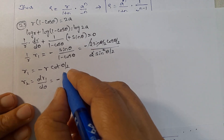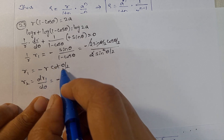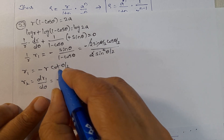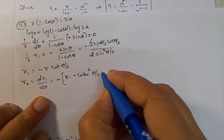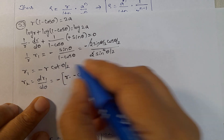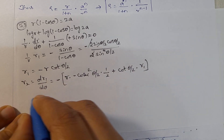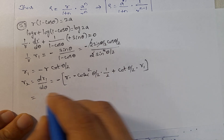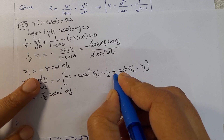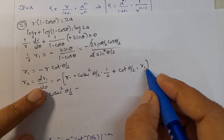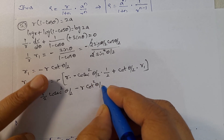So r1 = -r cot(θ/2). Differentiating r1 with respect to θ to find r2: using the product rule, first function r times differentiation of cot(θ/2) = -cosec²(θ/2) × (1/2), plus cot(θ/2) times differentiation of r which is r1.